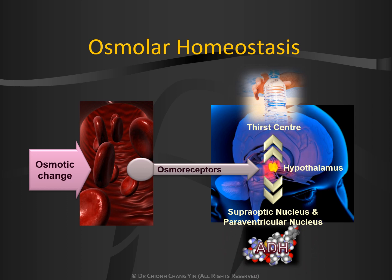The control of the osmoreceptors is actually very fine such that the osmolarity within the intravascular compartment varies by a very narrow range between 285 to 295 milliosmoles per kilogram.